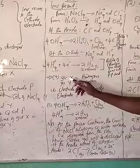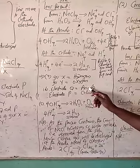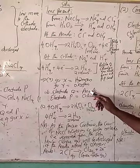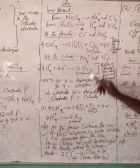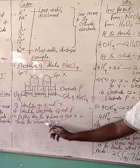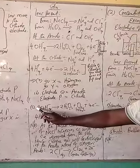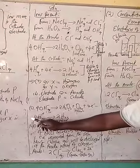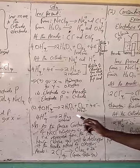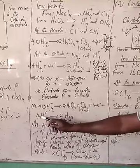In our question, gas X is hydrogen gas and gas Y is oxygen gas. Electrode Q, where one volume of gas is produced, is the anode, and electrode P is the cathode. If you are asked to explain why the volume of gas X is twice the volume of gas Y, you can write the two equations: at the anode, one volume of oxygen; at the cathode, two volumes of hydrogen. You can explain that the four electrons produced at the anode are accepted by the hydrogen to produce two volumes of hydrogen gas.